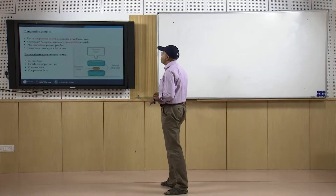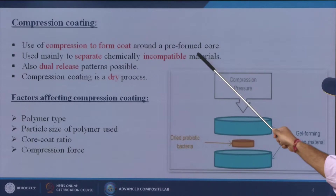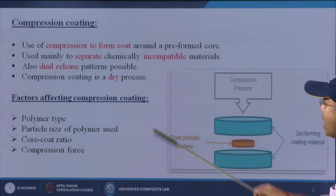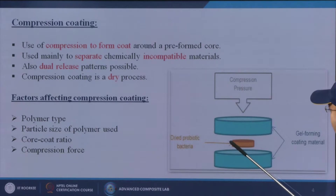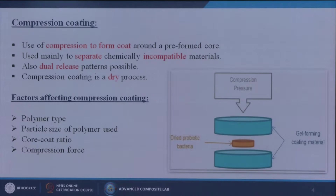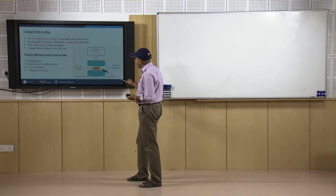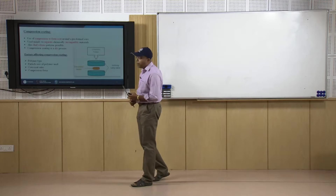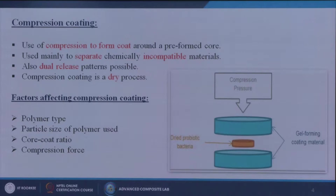The first one is known as compression coating. Here, compression is used to form a coat around a preformed core. It is used mainly to separate chemically incompatible materials, and a dual release pattern is possible. Compression coating is a dry process. In the example, dry probiotic bacteria are placed between two molds, coating materials are added, and by applying heat and mechanical pressure from both sides, the coating is applied. Factors include polymer type, particle size, core-to-coat ratio, and compression force, which determines the coating thickness.